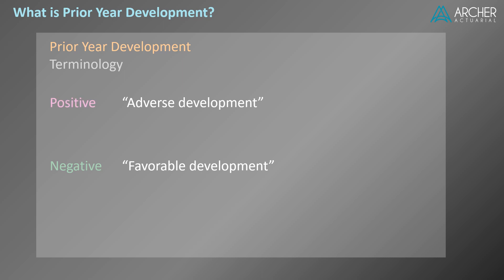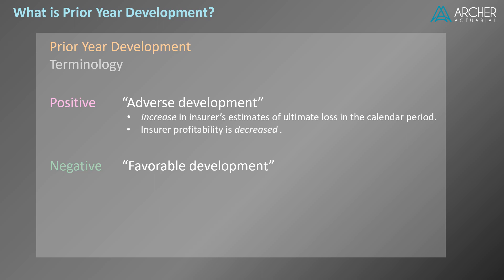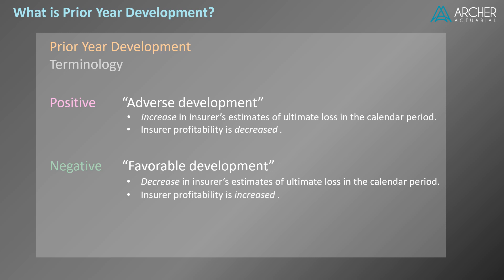A positive amount of prior year development is also called adverse development. Adverse development corresponds to an increase in the insurer's estimates of ultimate loss, which decreases insurer profitability for the period. On the other hand, a negative amount of prior year development is also called favorable development. Favorable development corresponds to a decrease in the insurer's estimate of ultimate loss, which increases insurer profitability for the period.